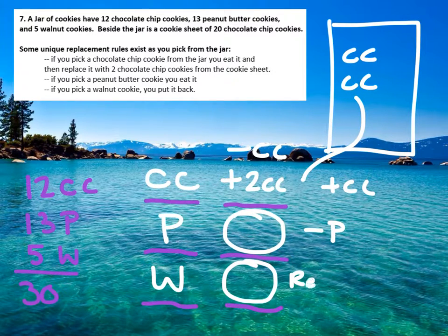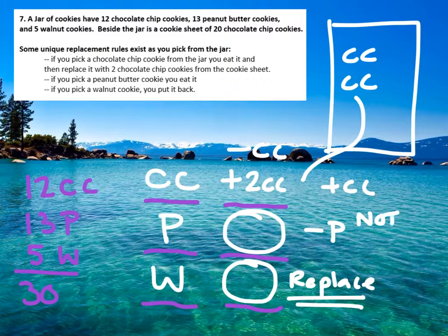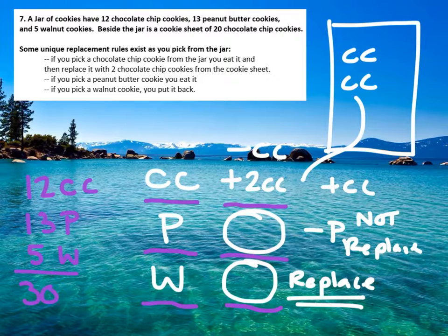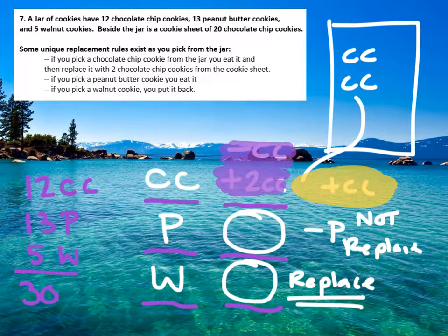That's like the replacement rule, right? Because you were down a walnut, but you added it back, so it just reset the table. The peanut butter example, when you eat it, is basically the example of not replacing — so that's normal. The goofy one is the chocolate chip one: you end up losing one but gaining two, so overall you actually get an extra chocolate chip in the bucket. Quite confusing, but quite a bit of fun.